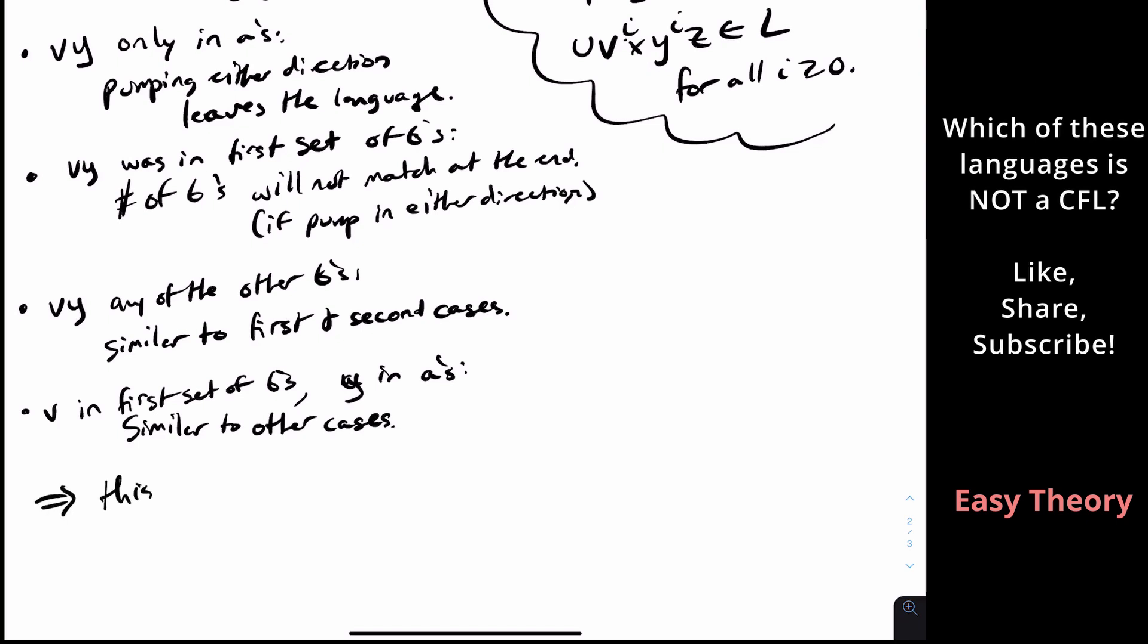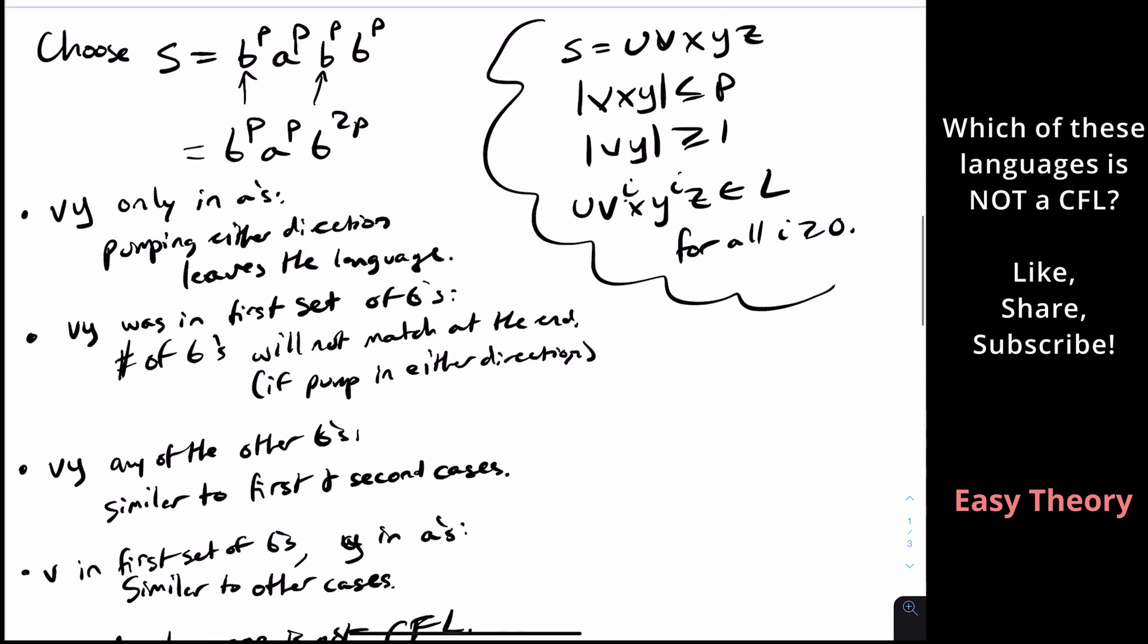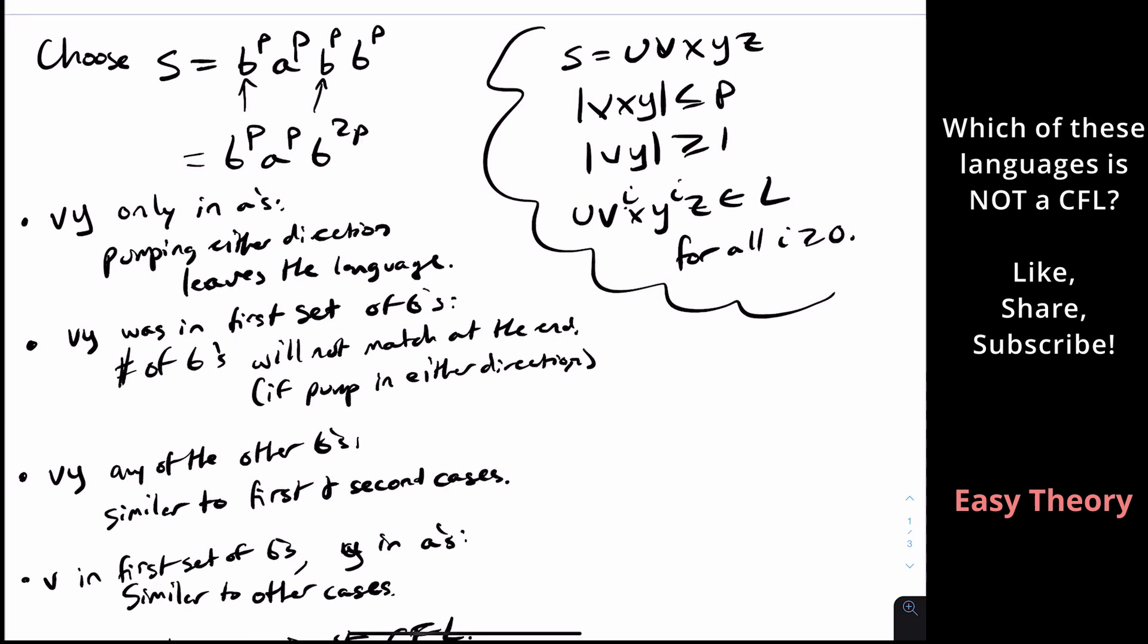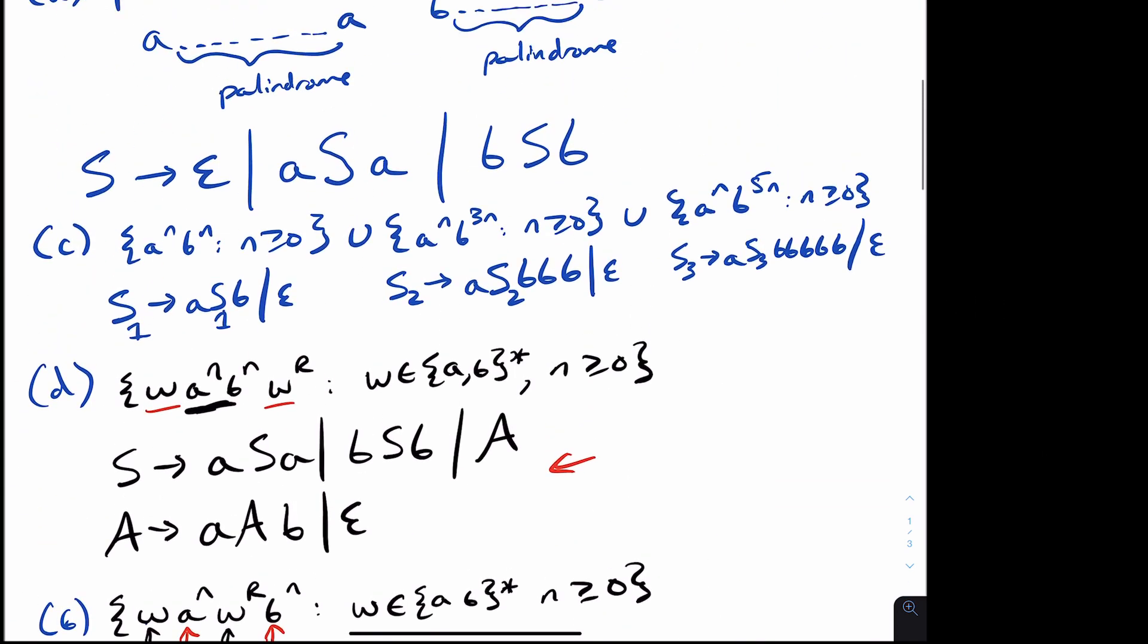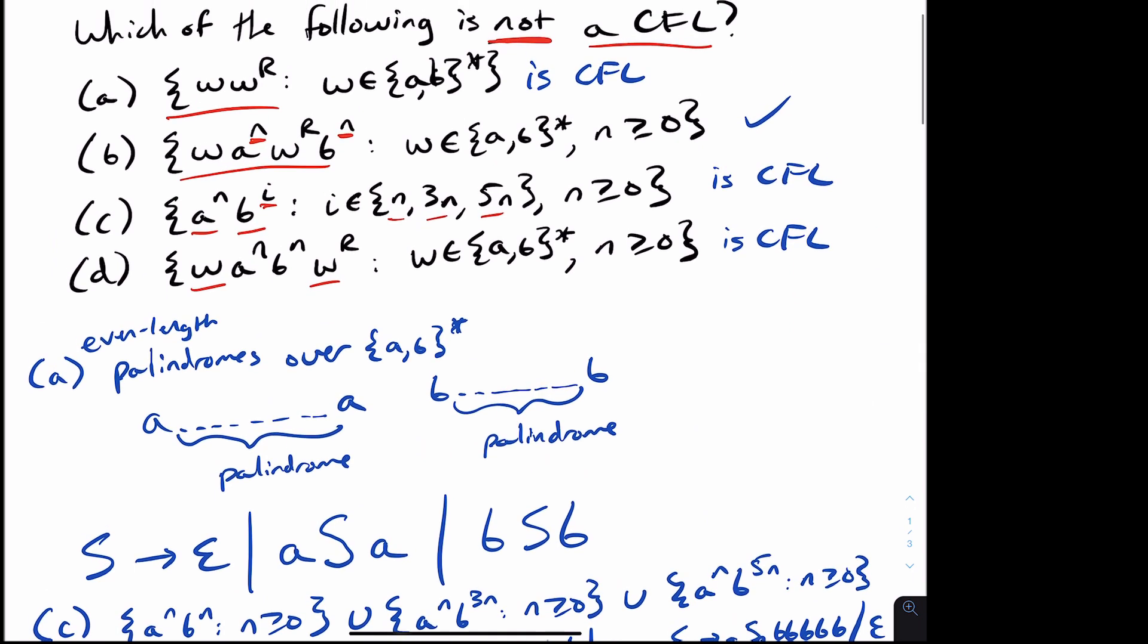So therefore, this language is not a context free language. Because no matter how we decompose it according to the rules, we will always leave the language, something will go wrong. Either we violate that the string w is not the same in both places, or the n for the a to the n b to the n part is not the same. So we can confidently say right now that the second language is not context free. So I'm going to write that in red. So this is not a context free language. And the other three are context free languages, because we made a context free grammar for them.